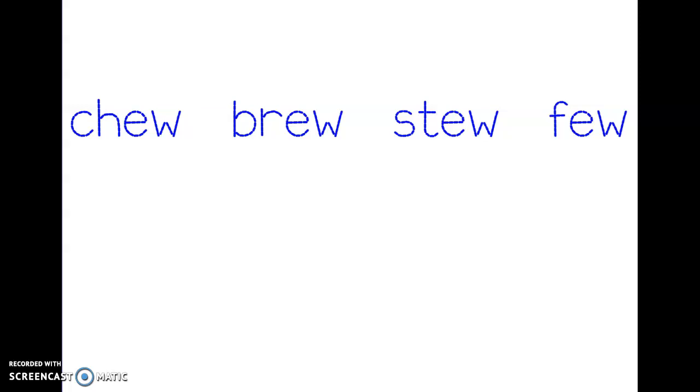Ew makes the sound as the long u. If you remember, a long u can make either a oo or a u sound. Digraph ew makes both of these sounds too. Oo as in two, or u as in few.